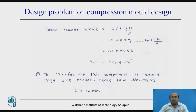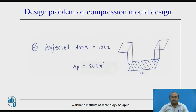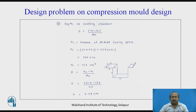Loose powder volume — recalling the formula: 1.2 into K into WP divided by rho. Since volume equals weight divided by rho, putting in the values, the loose powder volume comes out to be 201.6 cubic centimeters. To manufacture this component we require a large size mold, hence the land dimension L is equal to 12 mm. Projected area, in the direction of opening, is 10 into 2 = 20 square centimeters. Depth of loading chamber using the formula Vt minus Vc upon Ap — volume of actual cavity space is calculated — and D comes out to be 2.28 centimeters.